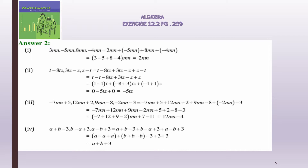3mn - 5mn - 8mn - 4mn: you have to add them. We will write an addition sign between them, and if there is a minus sign we will separate it with a bracket, because we cannot write two signs together without a bracket.